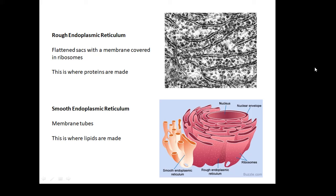Rough endoplasmic reticulum. These are flattened sacs with a membrane covered in ribosomes. Large surface area, all covered with ribosomes, making lots and lots of protein. This is rough endoplasmic reticulum.